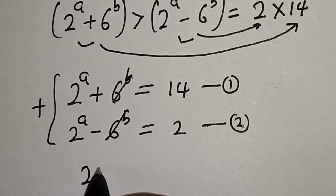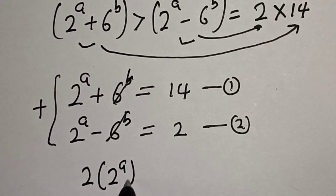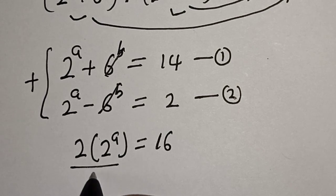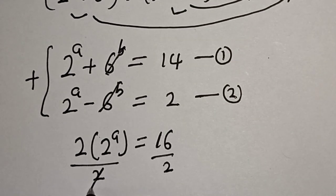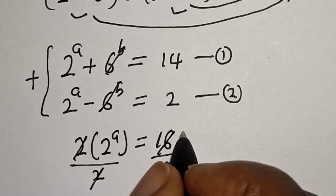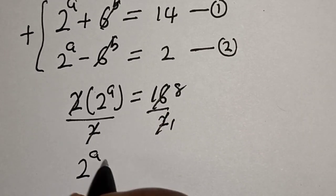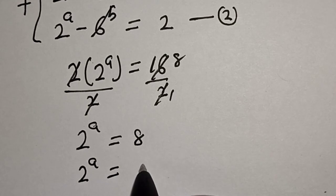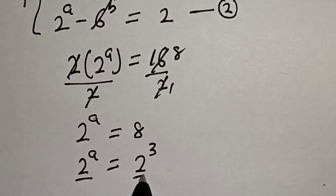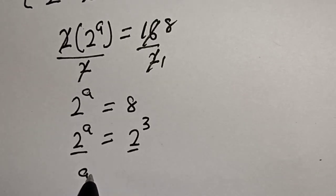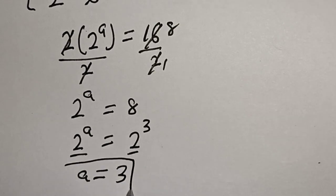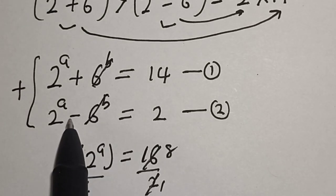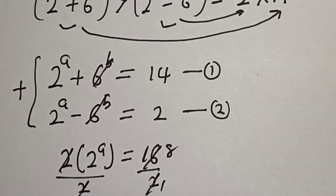If we add equation 1 and equation 2 together, the 6 to the power of b terms cancel. We get 2 times 2 to the power of a equals 14 plus 2, which is 16. Dividing both sides by 2 gives 2 to the power of a equals 8. Since 8 equals 2 to the power of 3, they have the same base, therefore a is equal to 3.